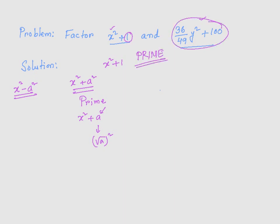And same way, this one is also a prime. We could rewrite it as 6y over 7 whole square, because 6y over 7 whole square is 6y over 7 times 6y over 7, that gives you 36 over 49 y squared plus 10 squared. 10 squared is 100. Again, because of this plus sign, it is going to be a prime.